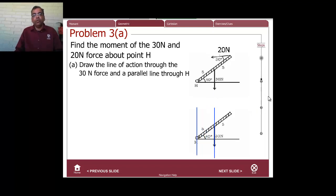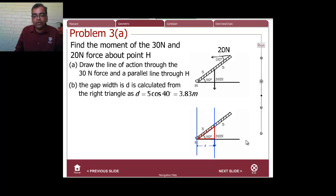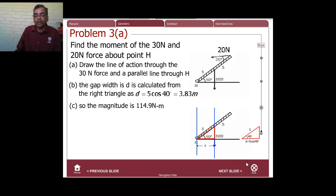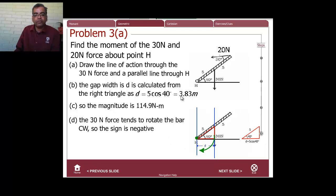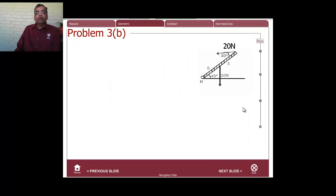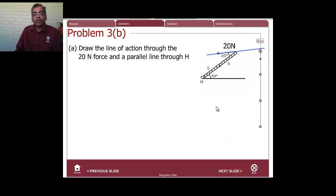I'm showing you several examples so you can see how we apply this procedure each time. For this case, I do a little trigonometry at 40 degrees and find the perpendicular distance. The result is 190 newton meters — wait, for the 30-newton force it's clockwise, so it's negative. Specifically, 3.83 times 30 gives 114 newton meters, negative.